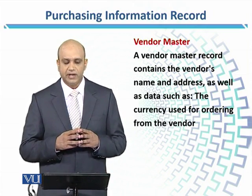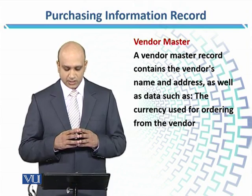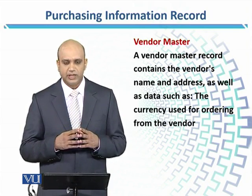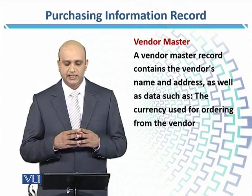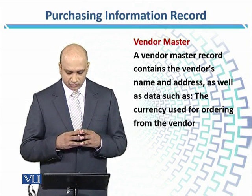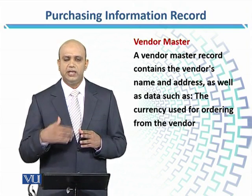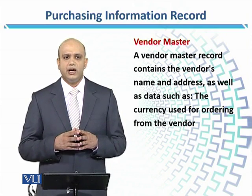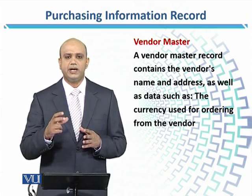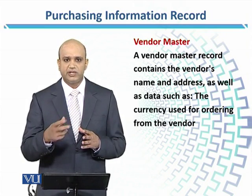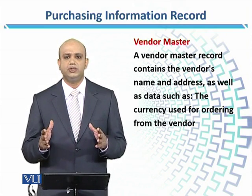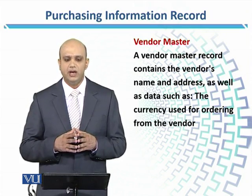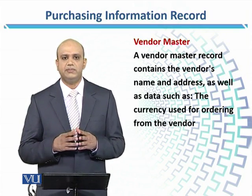A vendor master record contains the vendor's name and address, as well as data such as the currency used for ordering, terms and conditions, minimum quantity, and mode of transportation. So all the terms and conditions that have already been negotiated with that vendor — all of that information will be available in the vendor master.